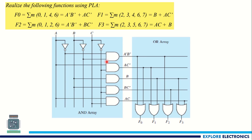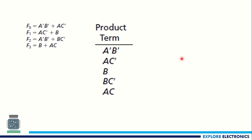In the PLA, we will be having an AND gate structure like this, and three inputs — A, B, C — generating A bar, B bar, C bar and their complement variables. We are going to get the output of AND gates like this. These are products, and the sum of those will be taken from OR gates. This represents an AND array, and this represents an OR array. Writing the table for this PLA by taking the product terms: for F0 we have A bar · B bar, then A · C bar, then B, then B · C bar, then AC.